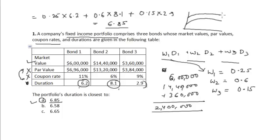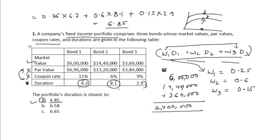A parallel shift means that yields corresponding to all maturities increase by the same amount. This formula does not hold for a non-parallel shift, where yields for longer-term maturities increase more than those for shorter-term maturities. The portfolio duration formula is valid only under the assumption of a parallel shift in the yield curve.